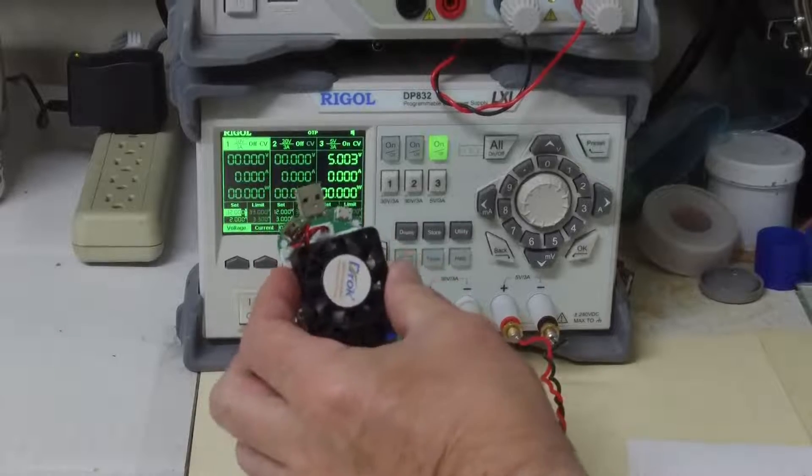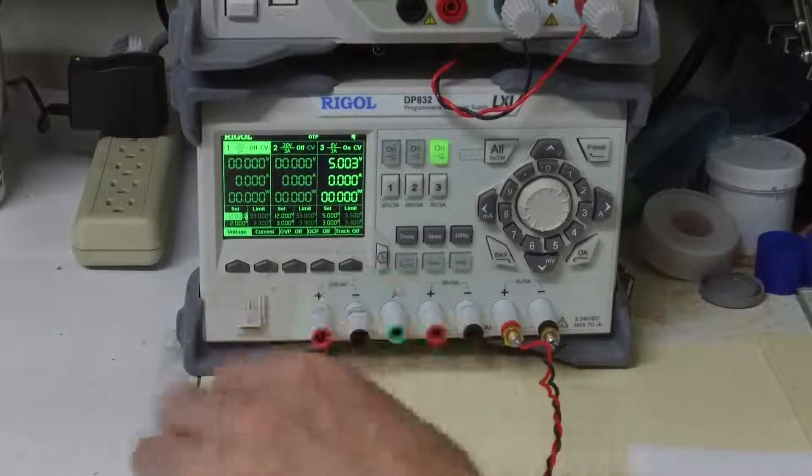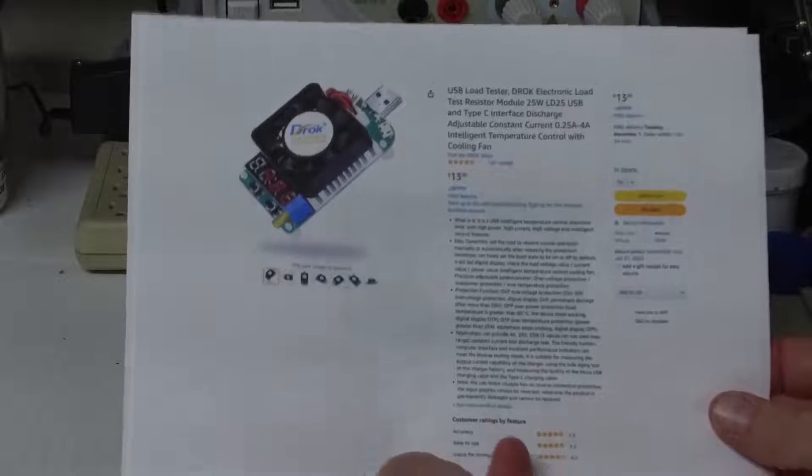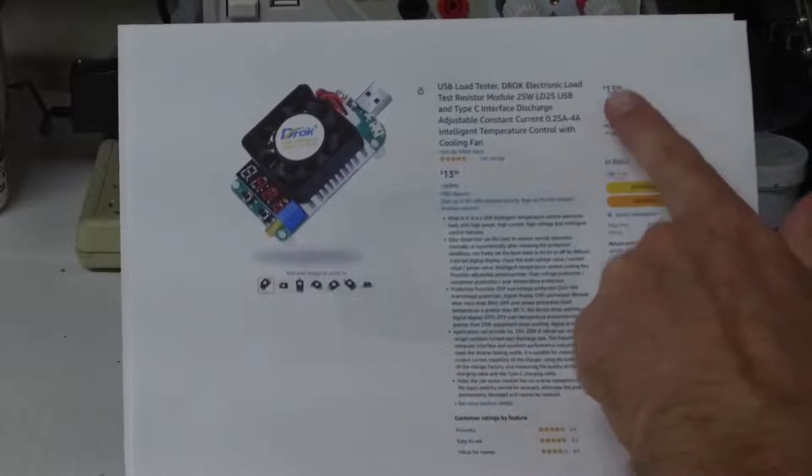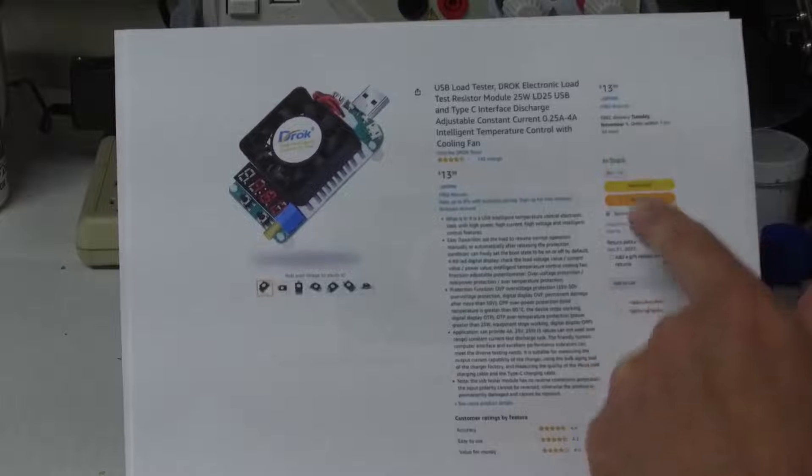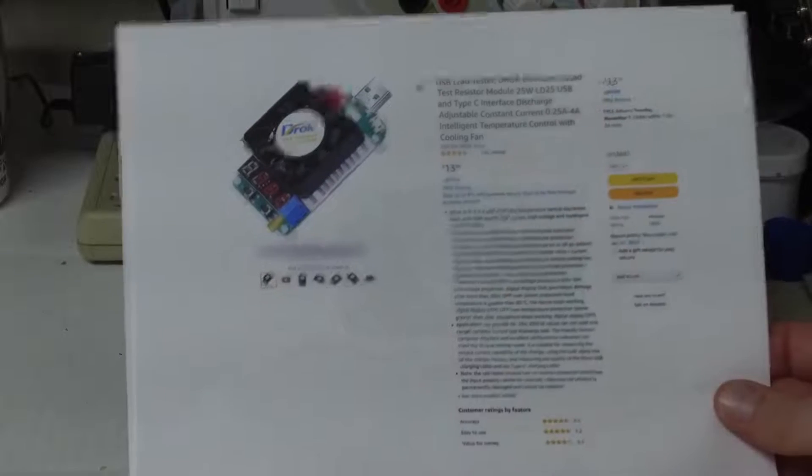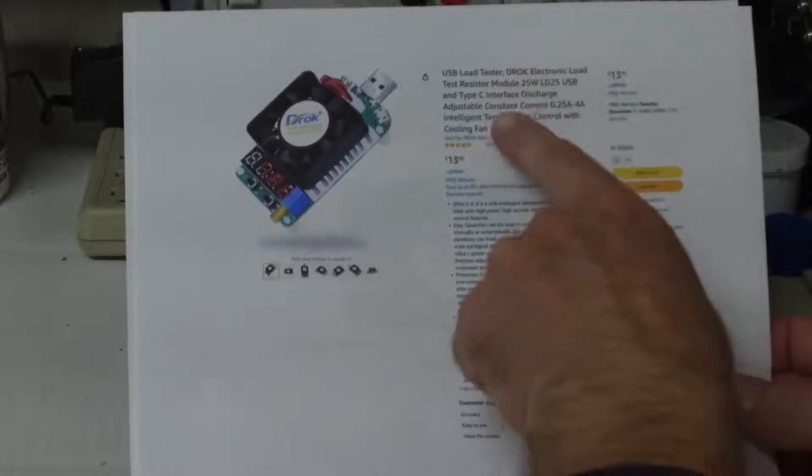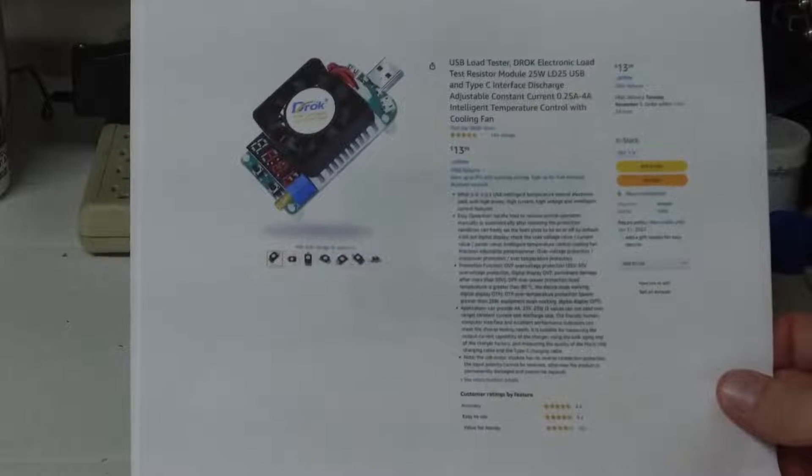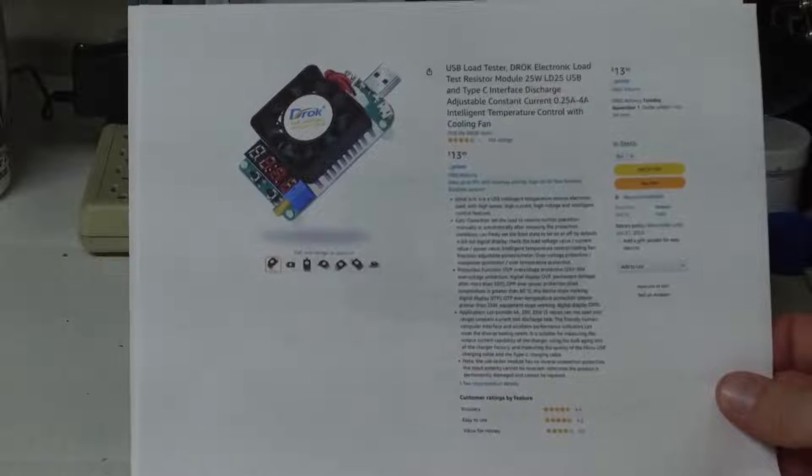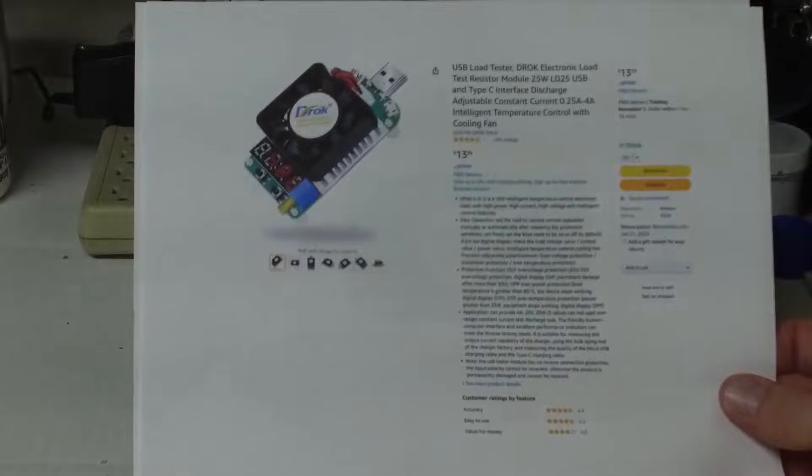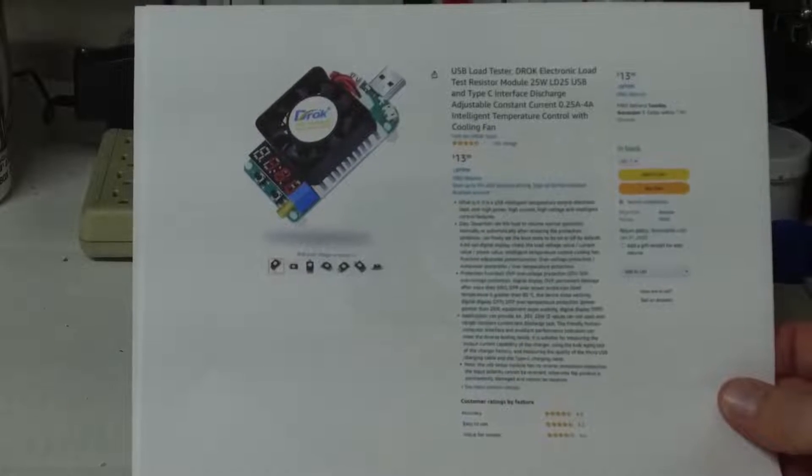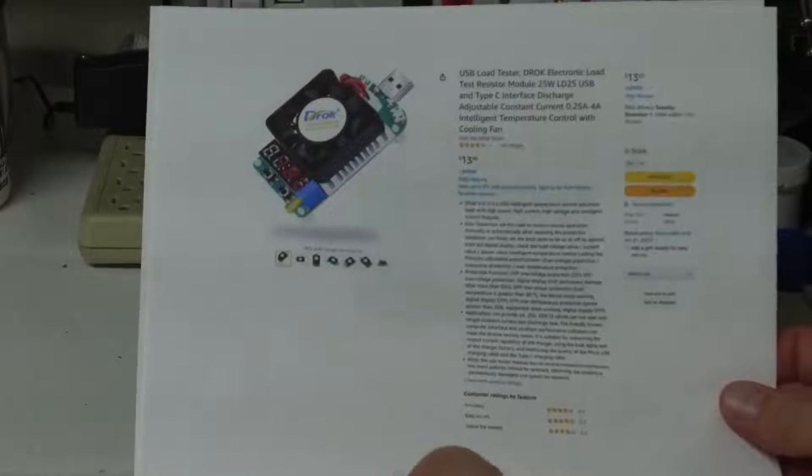I'm going to do a quick review and how it operates. This is the listing from Amazon.com. You can see that it is $13.99. It's rated for 25 watts with an adjustable current of 0.25 to 4 amps. We will give all that a go and see what type of accuracy we see.